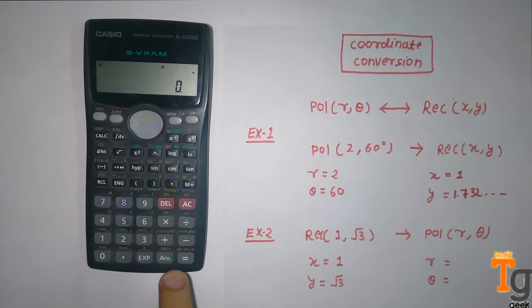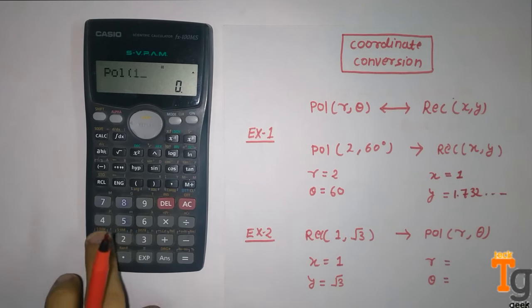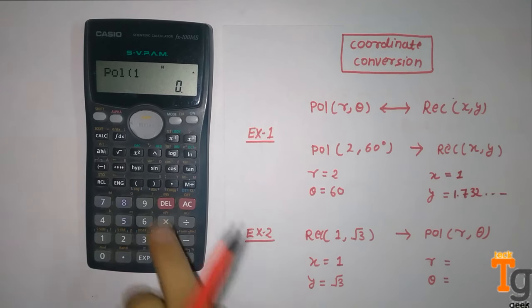We enter by pressing this and then plus, shift plus this. It will look like this and we will enter the values 1 which is the value of x and square root of 3.